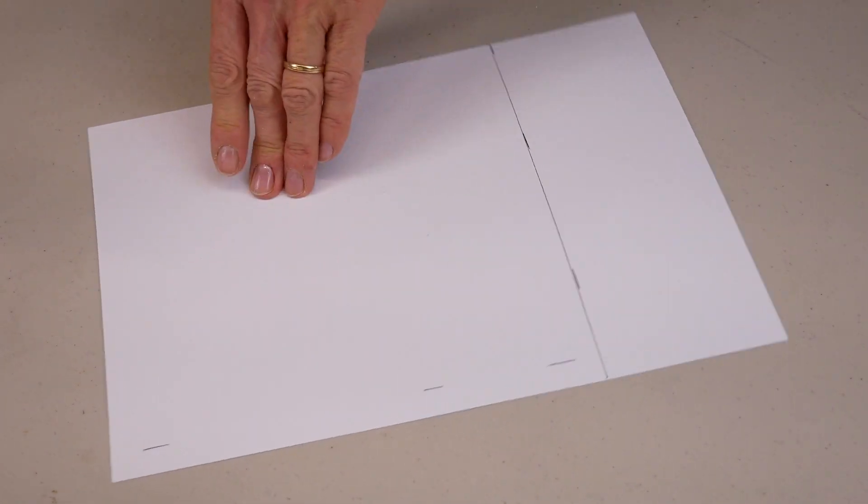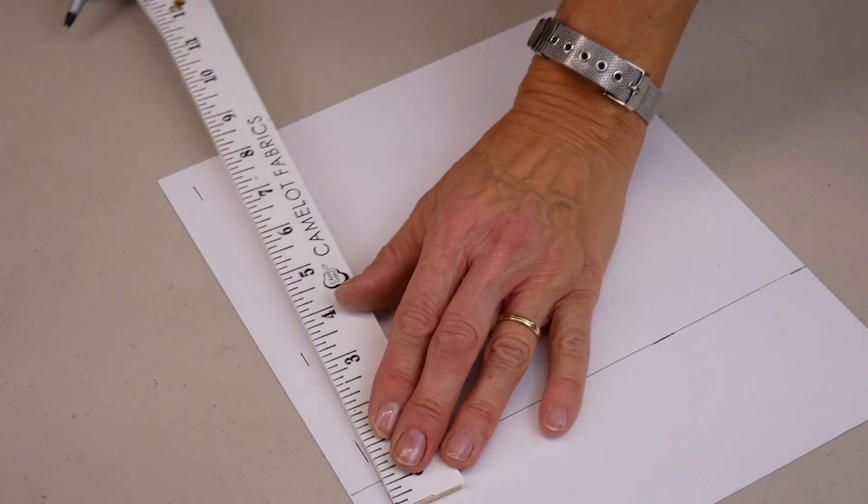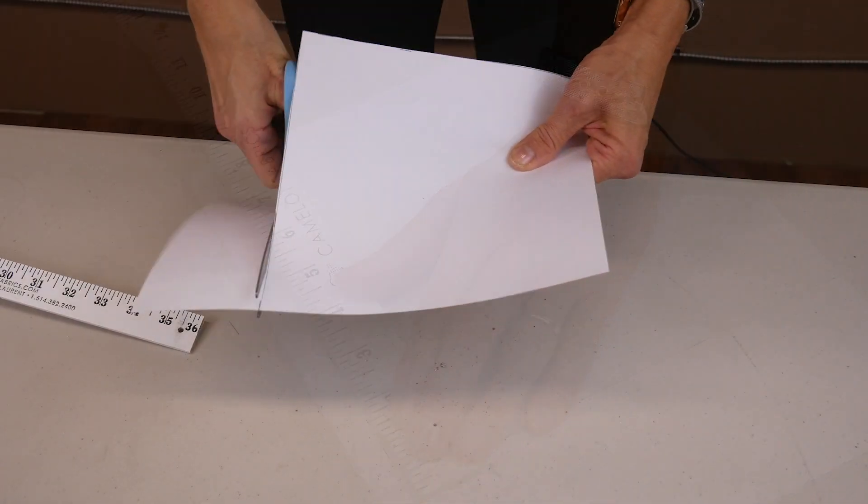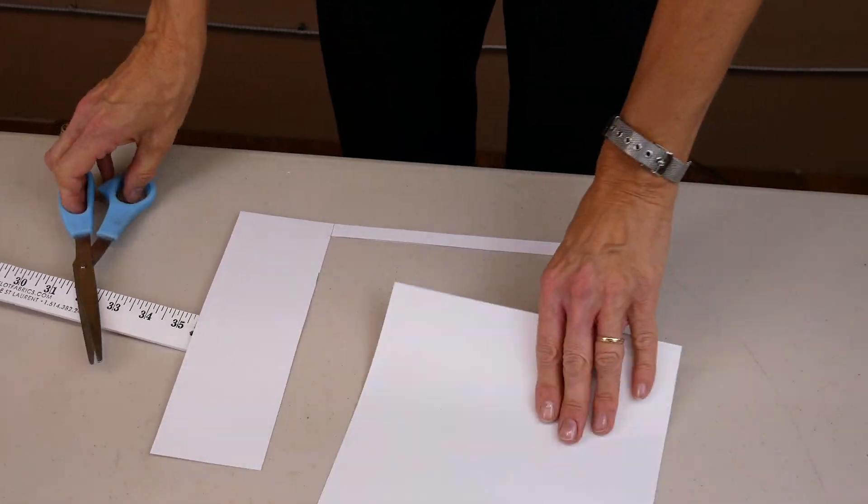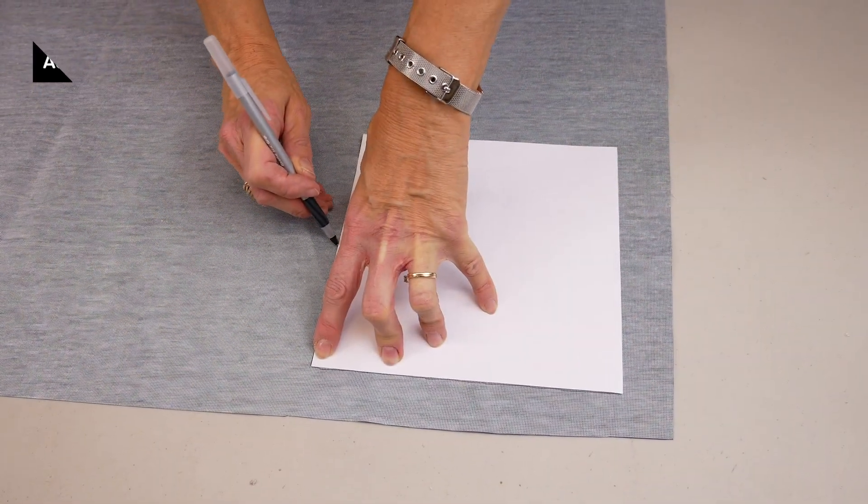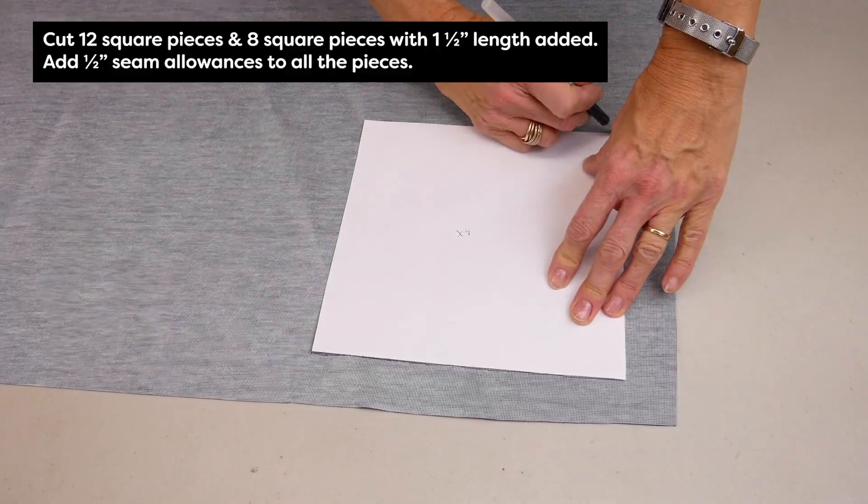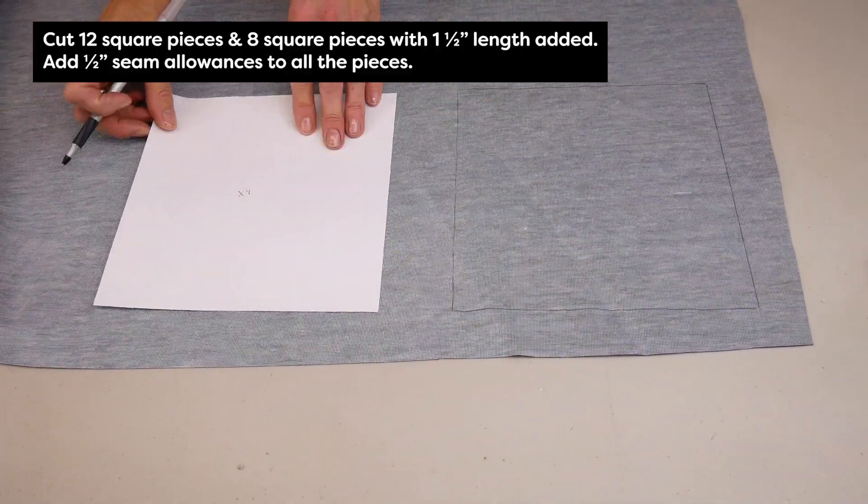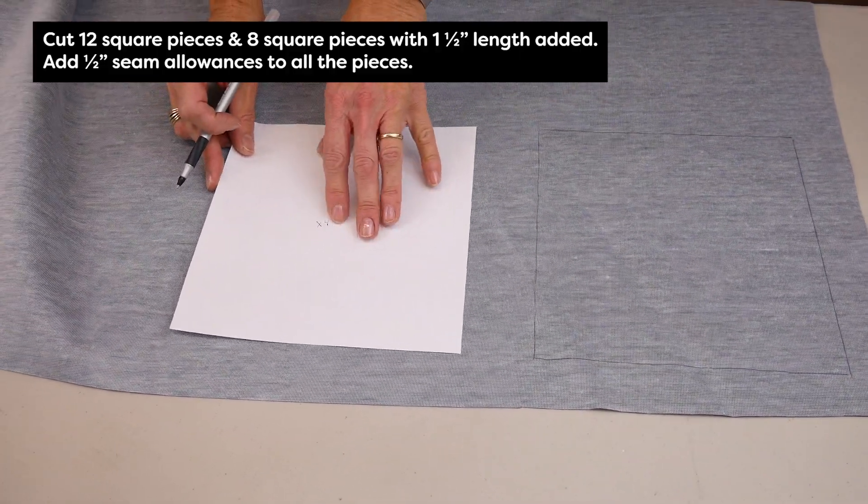Check to make sure all the squares are the same dimension, then cut one pattern piece out of firm paper or cardboard and place on the underside of your vinyl. Draw around the pattern with a pen or felt pen, leaving enough space between the squares for adding your seam allowance.